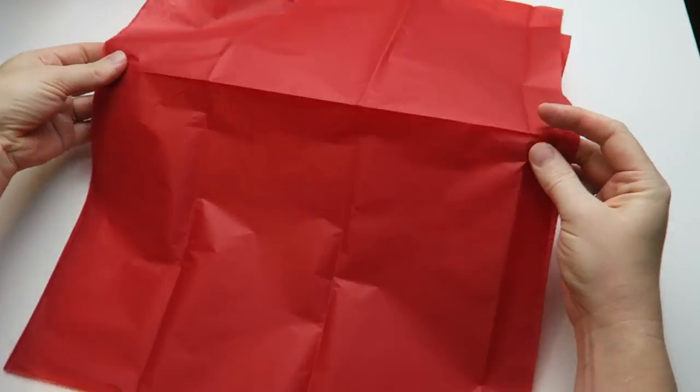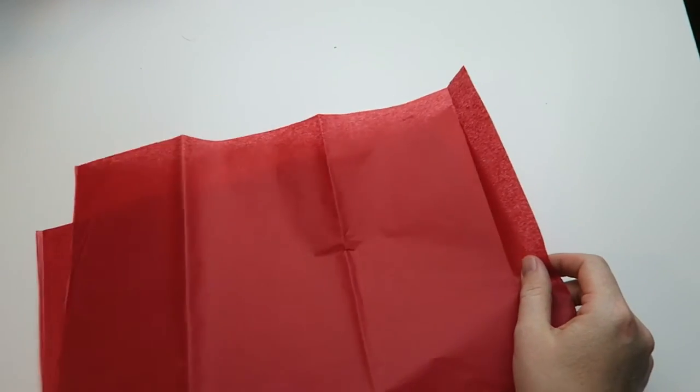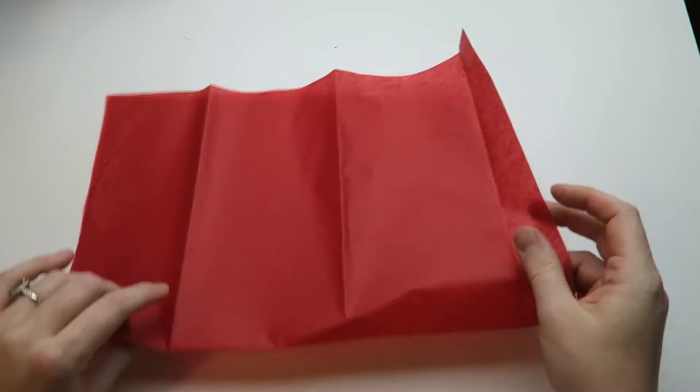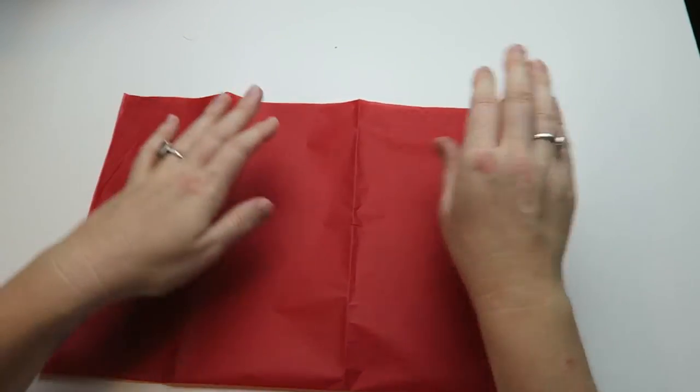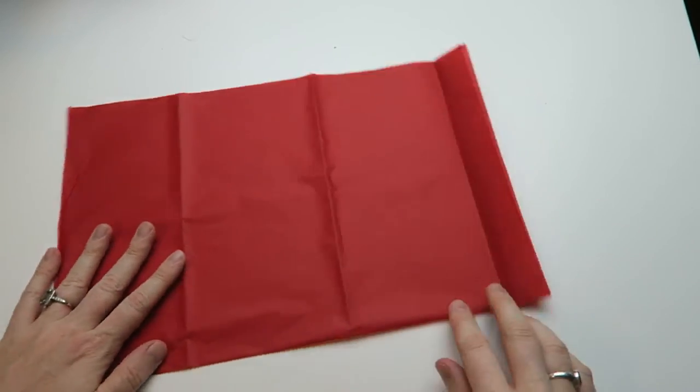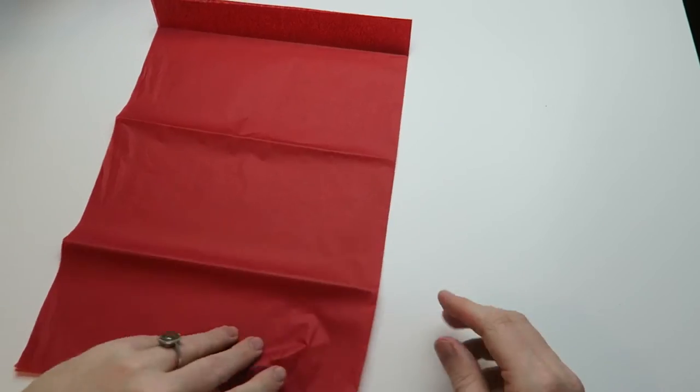So I'm starting off with my tissue paper and I'm folding it in half and then I'm cutting it. For this star we need eight different rectangles in the same dimensions, same proportions.